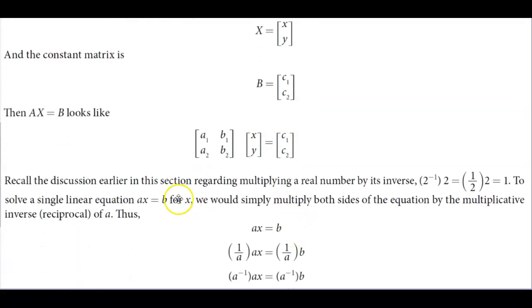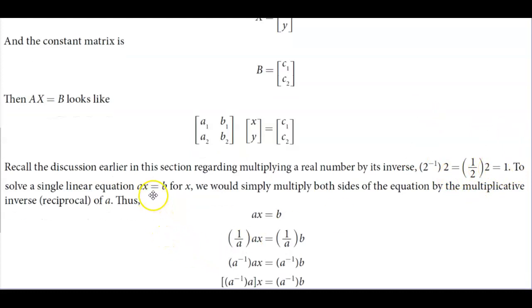Recall the discussion earlier in the section regarding multiplying a real number by its inverse. 2 to the negative 1 is the same thing as 1 over 2 times 2, which is equal to 1. To solve a linear equation AX equals B for X, we would simply multiply both sides of the equation by the multiplicative inverse, the reciprocal of A.